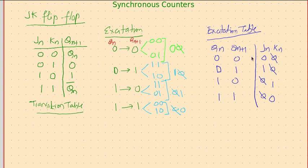So this is what we call excitation table. This is going to tell if JK values are known what is going to happen with the output. This is transition table and this will be useful while analyzing a counter, and this one will be used while designing a counter.